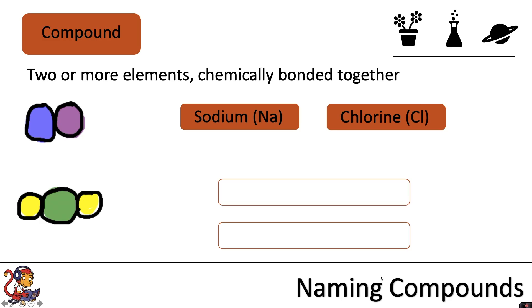On the periodic table, each element is given a symbol. For example, the symbol for sodium is Na and the symbol for chlorine is Cl. If sodium and chlorine were to bond together, they would make a compound.